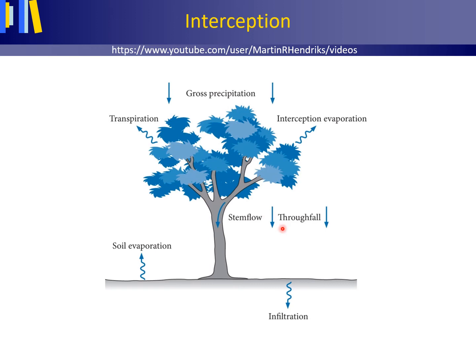Throughfall consists of raindrops that fall through spaces in the vegetation canopy and that drip from wet leaves and branches.